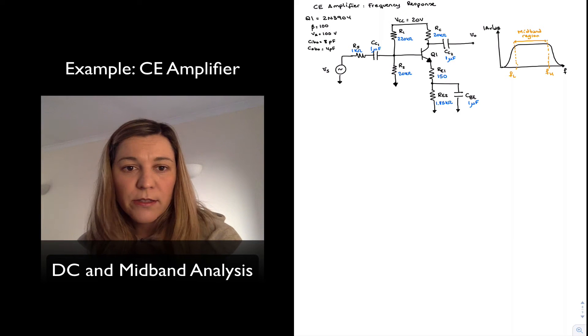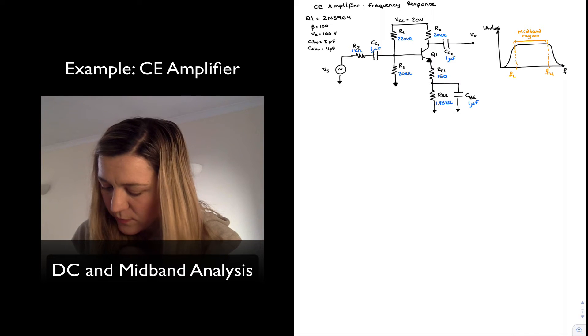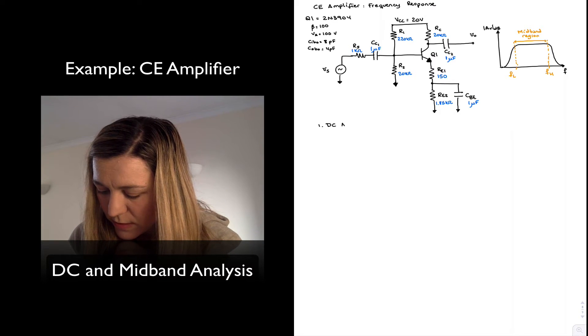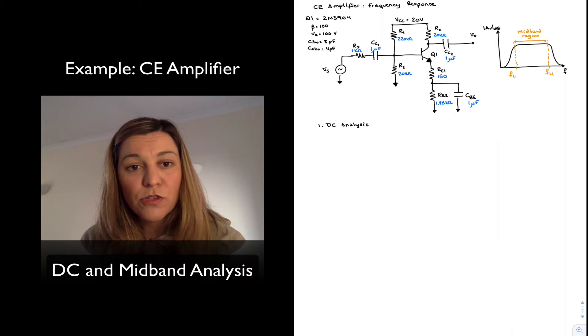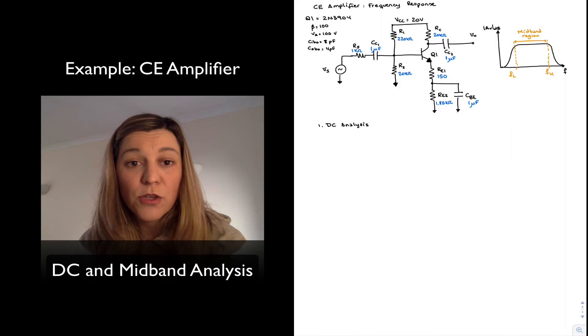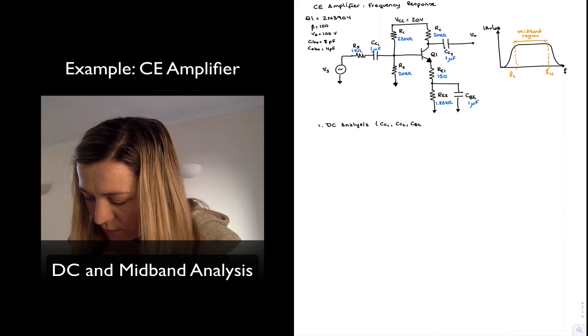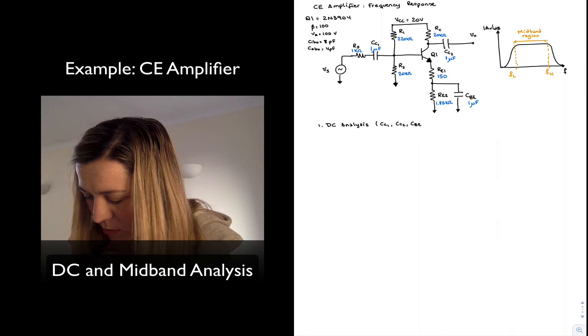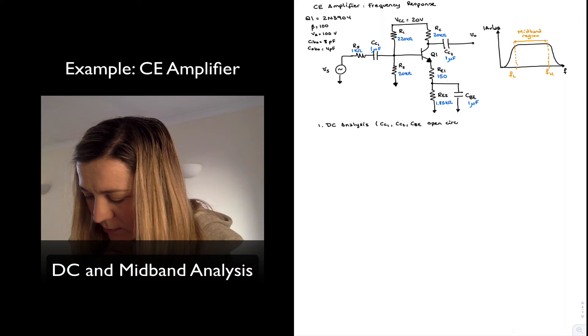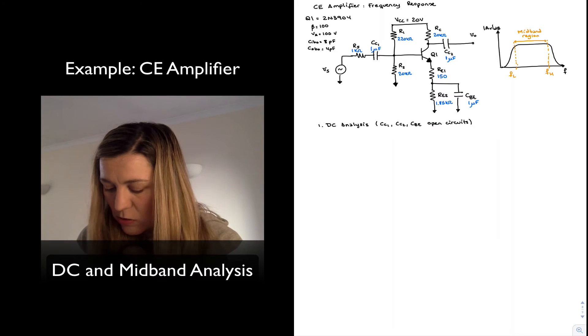The first thing I'm going to do is the DC analysis to determine the bias point. So, one, my DC analysis. And for my DC analysis, I'm going to be using my DC equivalent circuit, where I am assuming all my capacitors act as open circuits. So I'm going to assume CC1, CC2, and CBE are open circuits. Alright, and so let's get started.